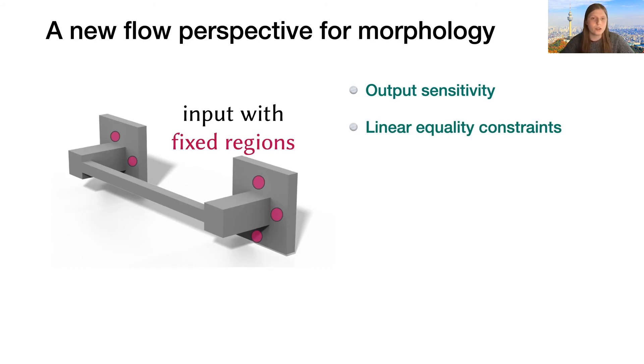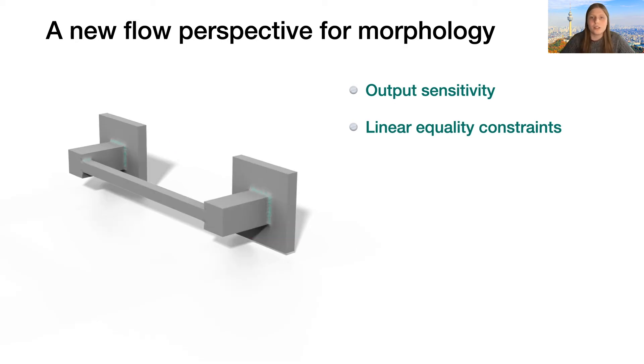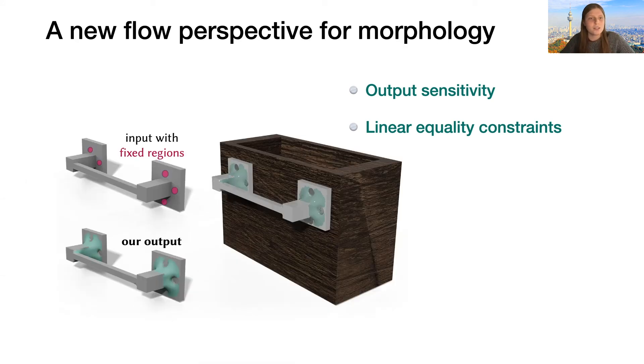Furthermore, the discretization of our flow as a quadratic energy minimization means that we can trivially incorporate linear equality constraints. For instance, we can set fixed-point constraints to our flow. That way, we can design a drawer handle with nail holes like this.